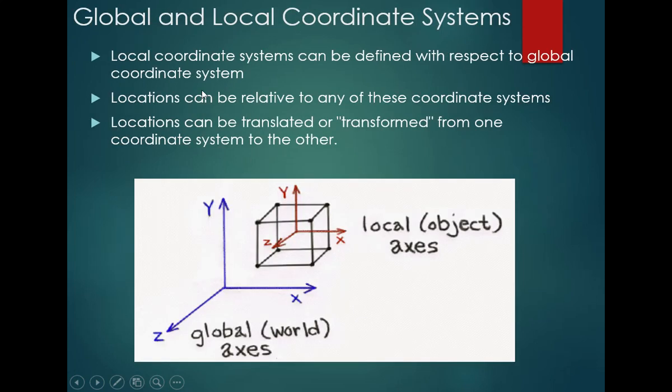Global and local coordinate systems can be defined with respect to the global coordinate system. You can represent both a global coordinate system and a local coordinate system. Locations can be relative to any of these coordinate systems, and a location can be translated from one coordinate system to the other.